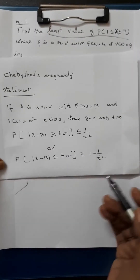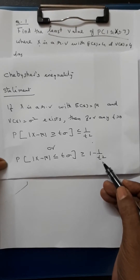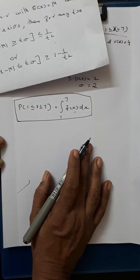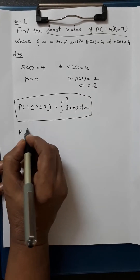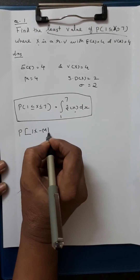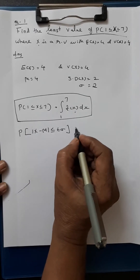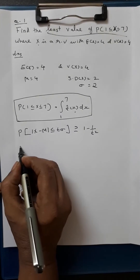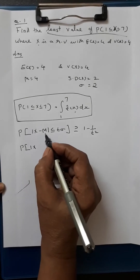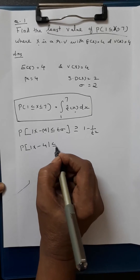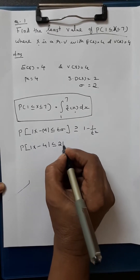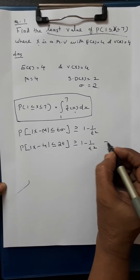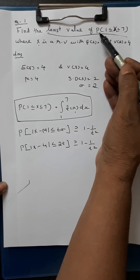Since we need the least value, we are thinking about the lower bound. So the appropriate form of Chebyshev's inequality here is P(|x − μ| ≤ tσ) ≥ 1 − 1/t², which is our first expression.